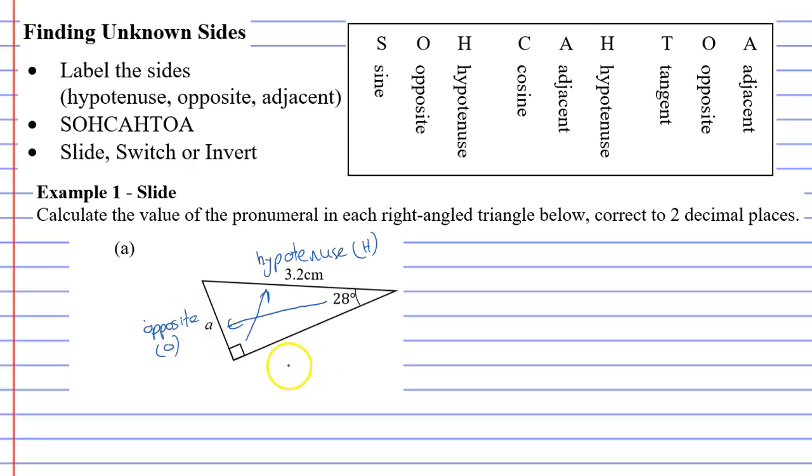And last of all, you have what's called your adjacent. Adjacent means next to. So the adjacent side is next to the 28 degree angle.